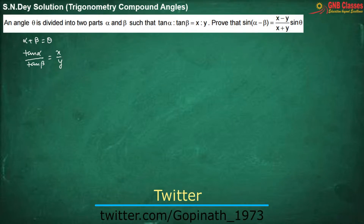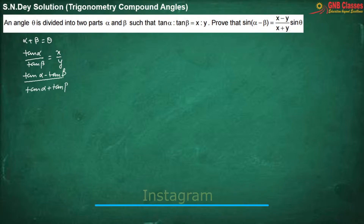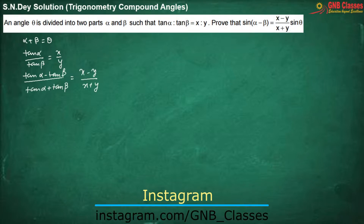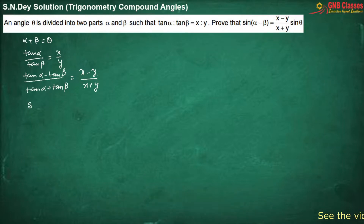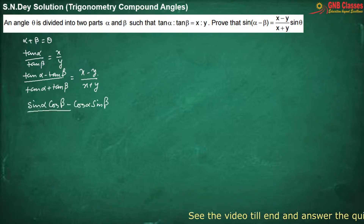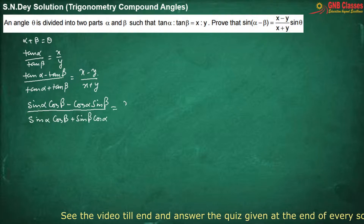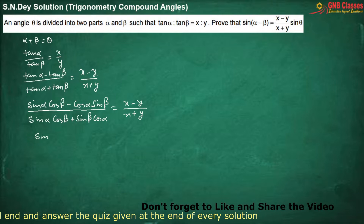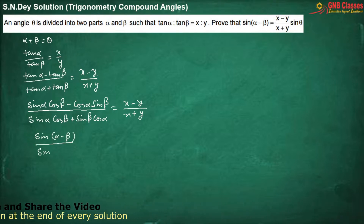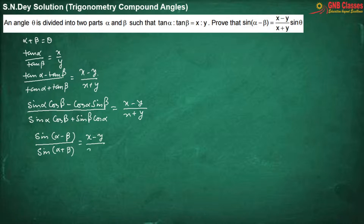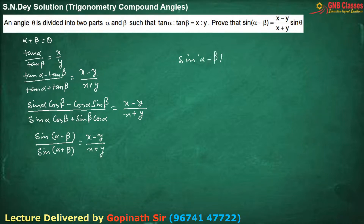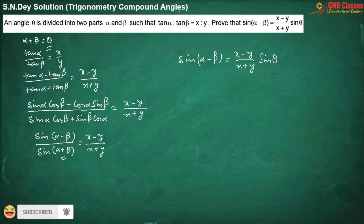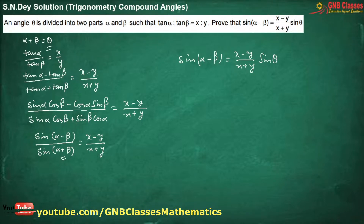We are applying componendo and dividendo. Converting tan in terms of sine and cosine, in the numerator we are getting sine of the sum and in the denominator as well, which equals sine theta, because alpha plus beta can be replaced by theta. So we are getting sine alpha minus beta equals to x minus y by x plus y into sine theta.